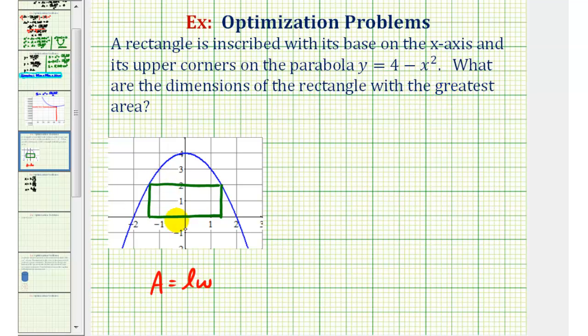Notice how this green rectangle does fit the conditions described. So let's consider the coordinates of this point and this point to help us find the dimensions of the rectangle in terms of x.